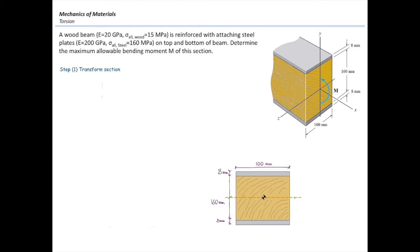This is a composite beam because it is made up of two different materials, and we have to transform this section. We can transform it into either wood or steel, and either way we go we should get the same exact final answer. For this case, I'm going to transform the section into entirely steel.